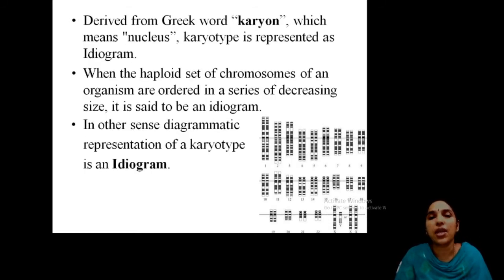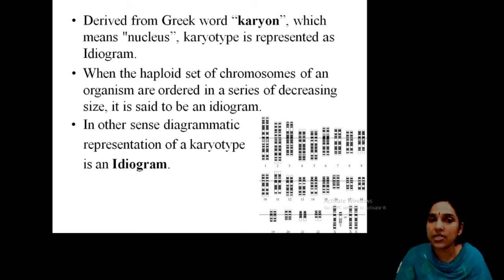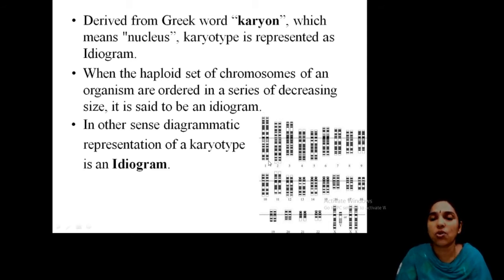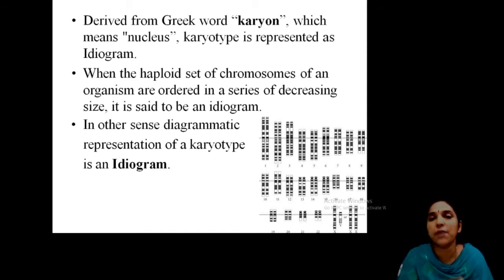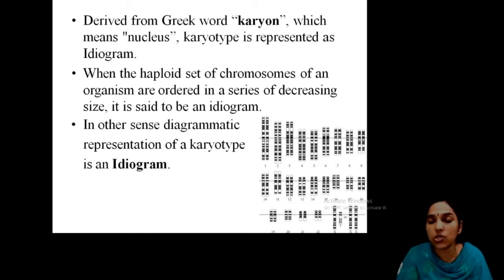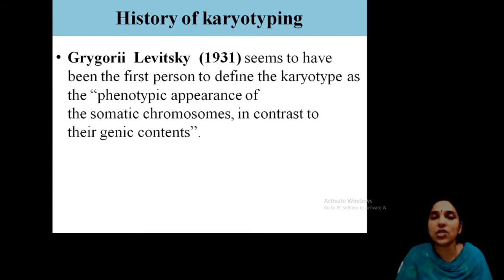The term 'karyon' means nucleus. Karyotype is represented in the form of a diagram known as an ideogram. When a set of chromosomes of an organism is ordered in decreasing size, that is called an ideogram. As you can see in the image, the largest chromosomes are shown first, decreasing to the smallest. This diagrammatic representation of karyotype ordered in decreasing size is known as an ideogram.